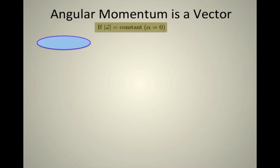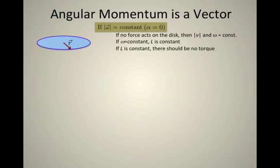If a disk is spinning with constant angular speed, in other words its angular acceleration alpha is equal to zero, then that means there's no force acting on the disk. The velocity of some point on its rim is constant and so is omega equal to a constant. If omega is constant then the angular momentum which is equal to I omega is also constant, and if L is constant there shouldn't be a torque because we're told that torque is equal to delta L over delta T. It's a change in angular momentum. So we should just have an omega vector pointing straight up and a velocity vector which processes around the rim of the disk.